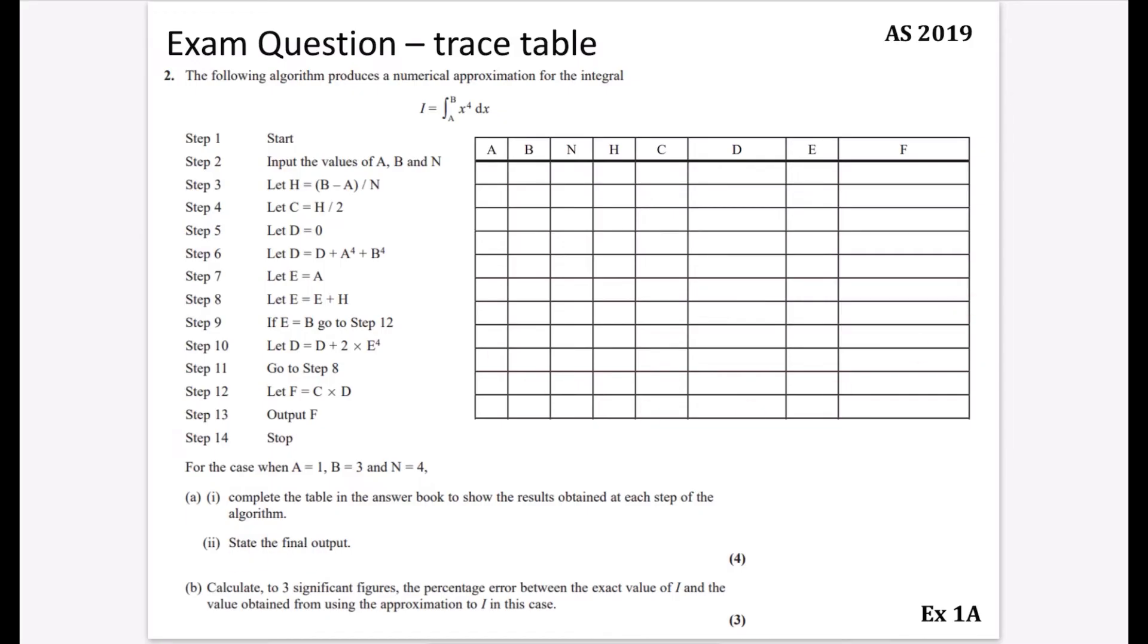Step 1 says input the values of a, b, and n. Let h equal b minus a divided by n. That's 3 minus 1 divided by 4, which is 0.5. Let c equal h divided by 2, which is 0.25. Let d equal 0. Then d equals d plus a to the fourth plus b to the fourth. That's 1 to the power of 4 plus 3 to the power of 4, so d is 82.